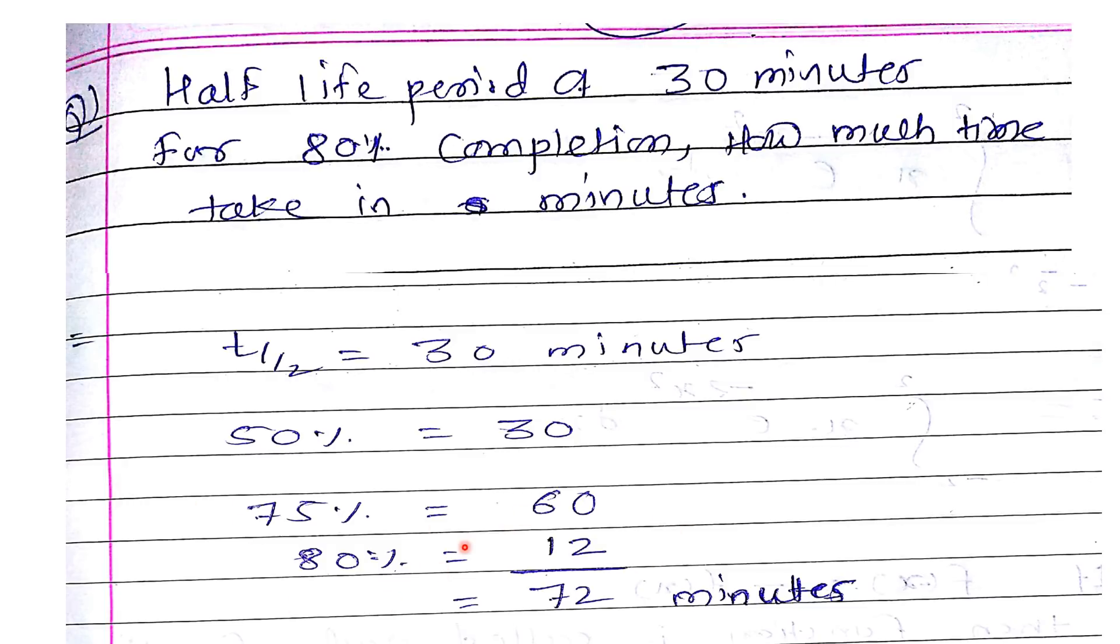They are asking for 87.5%. If you calculate, in this case we will get 72 because we have to divide by 30. We have to make it in fractions, then it gives 6 times 12. So we add 60 plus 12 is 72 minutes. This is the correct option.